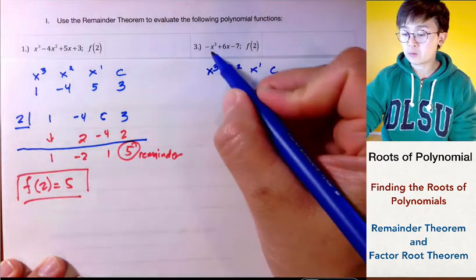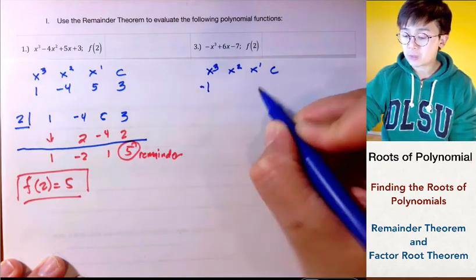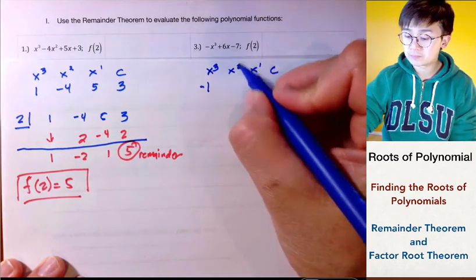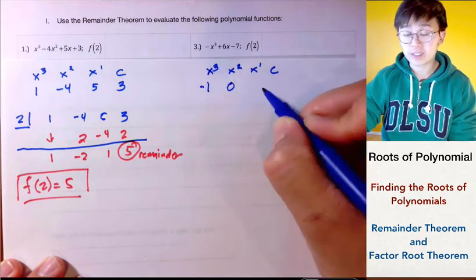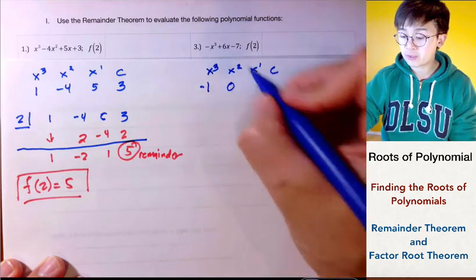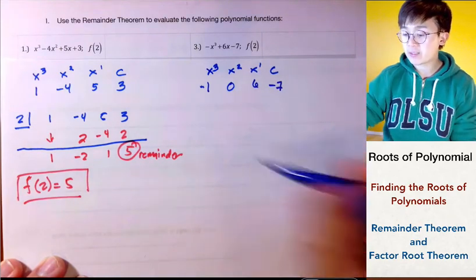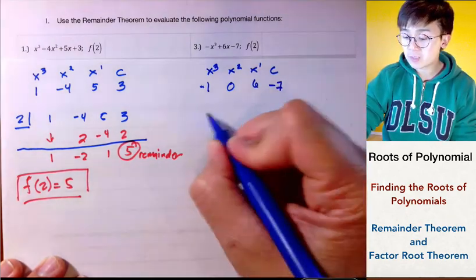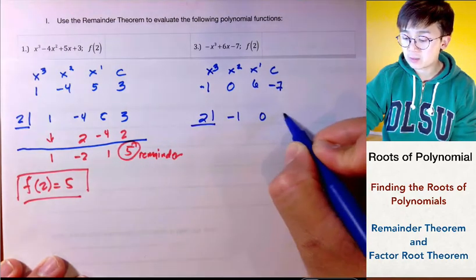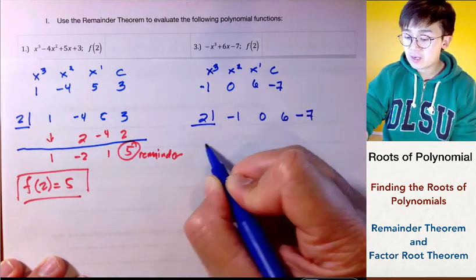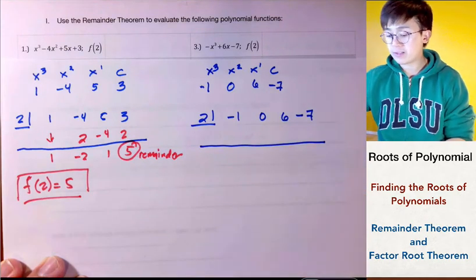If we have x cubed we need x squared, x to the first, and a constant. The coefficient of x cubed is negative 1, x squared is missing so we replace it with 0, x to the first is 6, and the constant is negative 7. So using synthetic division with 2 as our divisor, we have negative 1, 0, 6, and negative 7.